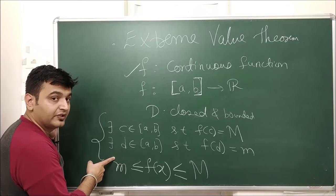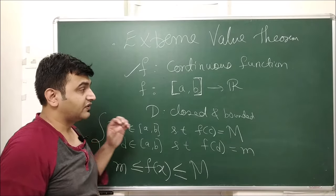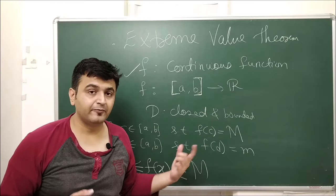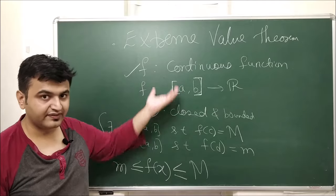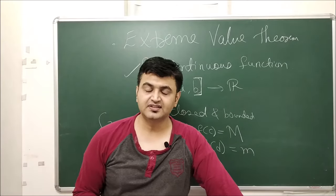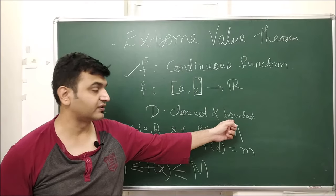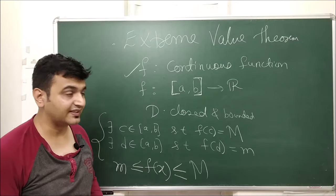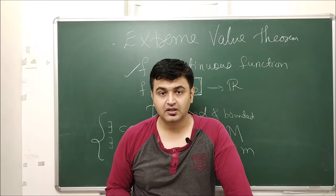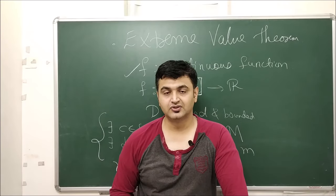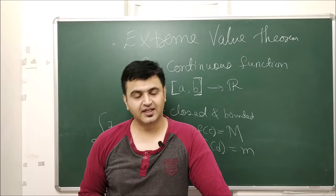So extreme values are guaranteed under these conditions. Note that the converse is not true — if you have an example of a function that has extreme values but violates one of the conditions, you can post it in the comment section. That is the homework for this session. This theorem is very important: under continuity and closed-boundedness of the domain, extreme values always exist. If you have any doubts, ask in the comments, and if everything is clear, do like, share, and subscribe. Thank you.